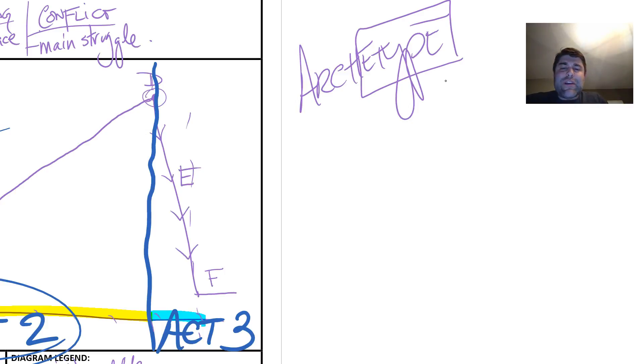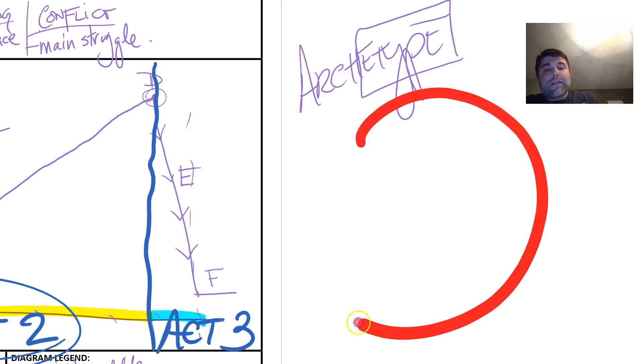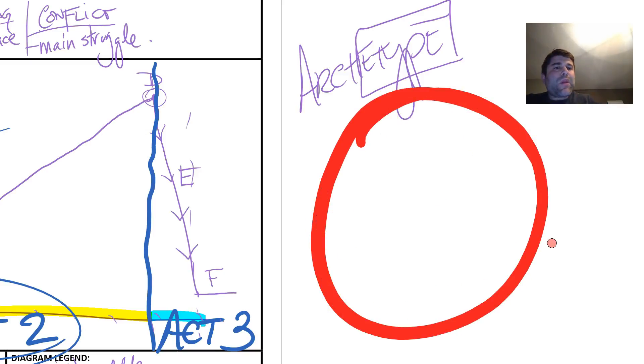Joseph Campbell came up with this cyclical journey for the hero. It basically looks exactly like a circle with a line cut through the top third of it.